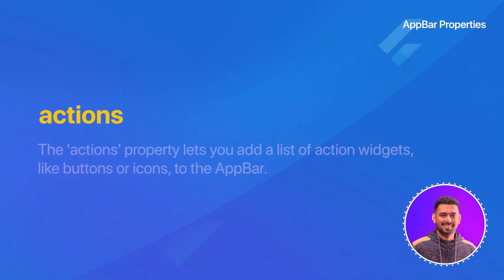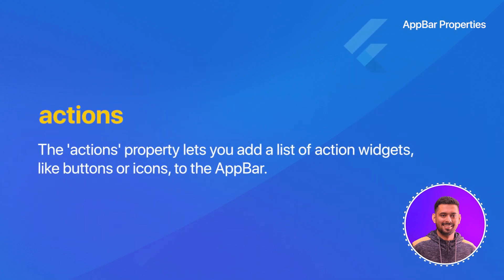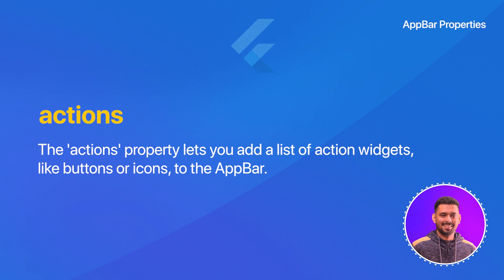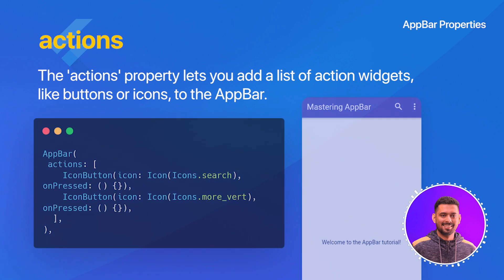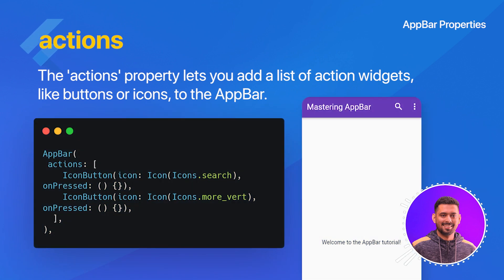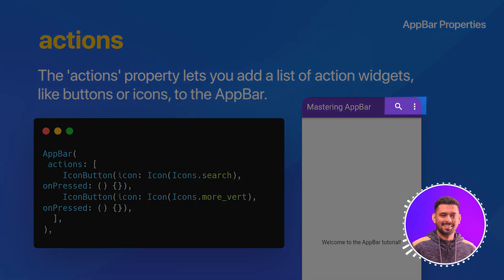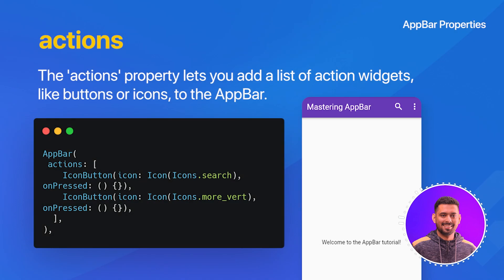Actions: the Actions property lets you add a list of widgets like buttons or icons on the AppBar. Here we have added two IconButton widgets to the AppBar — one for search and another for menu.